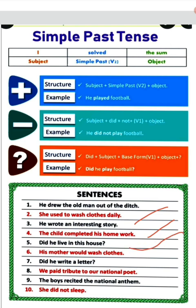अब यहां पे आगे आपका interrogative। Did is — यह वाला structure use होगा। सबसे पहले 'did' लिखा, फिर subject 'he', फिर base form 'live', और object 'in the house', और last में question mark। Did he live in the house? अगर हम लोगों को second form लिखना होता, तो 'lived' होता। Don't forget to put the question mark।